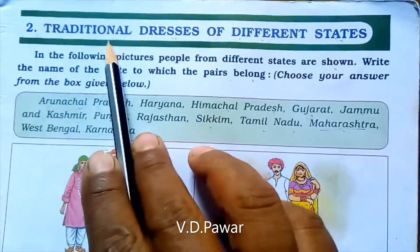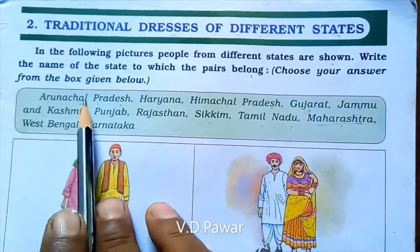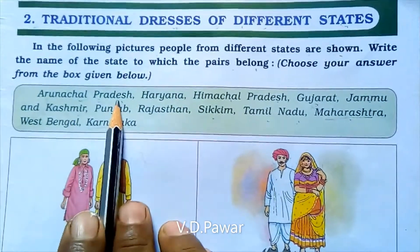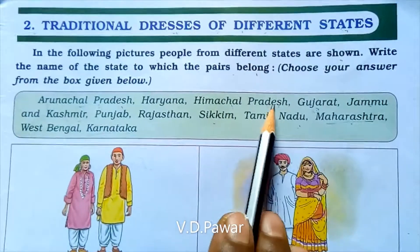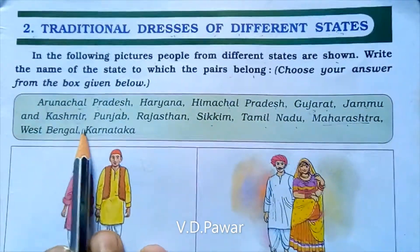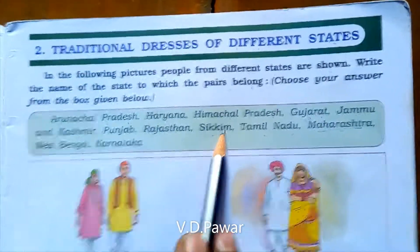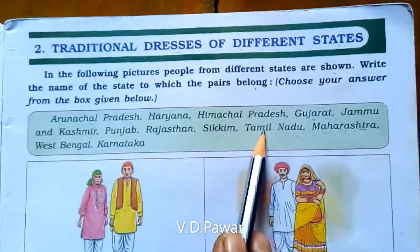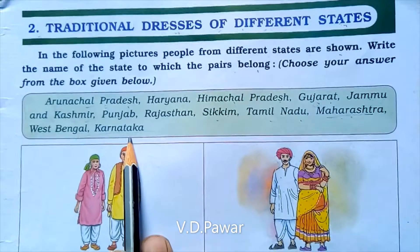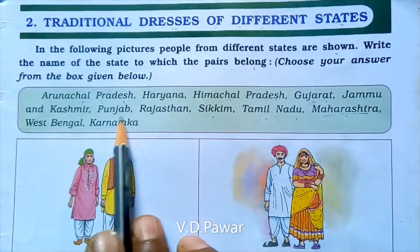Children, first let us look at the names of the states we will study. The states are: Arunachal Pradesh, Haryana, Himachal Pradesh, Gujarat, Jammu and Kashmir, Punjab, Rajasthan, Sikkim, Tamil Nadu, Maharashtra, West Bengal, and Karnataka. These are the names of the states in our country.